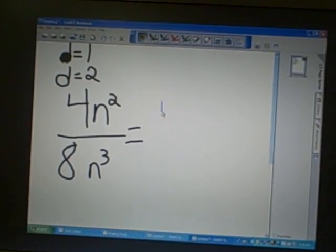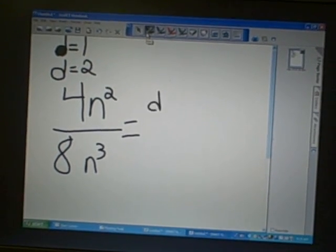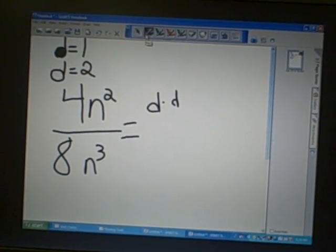To simplify 4n squared would be half note times half note times n times n.